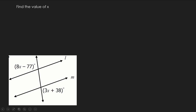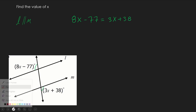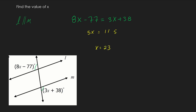Line l is parallel to line m, so all properties apply. These two angles are alternate exterior angles, which means they are congruent. So we set up: 8x minus 77 equals 3x plus 38. Subtracting 3x gives 5x; adding 77 gives 115; dividing by 5 gives us x equals 23.